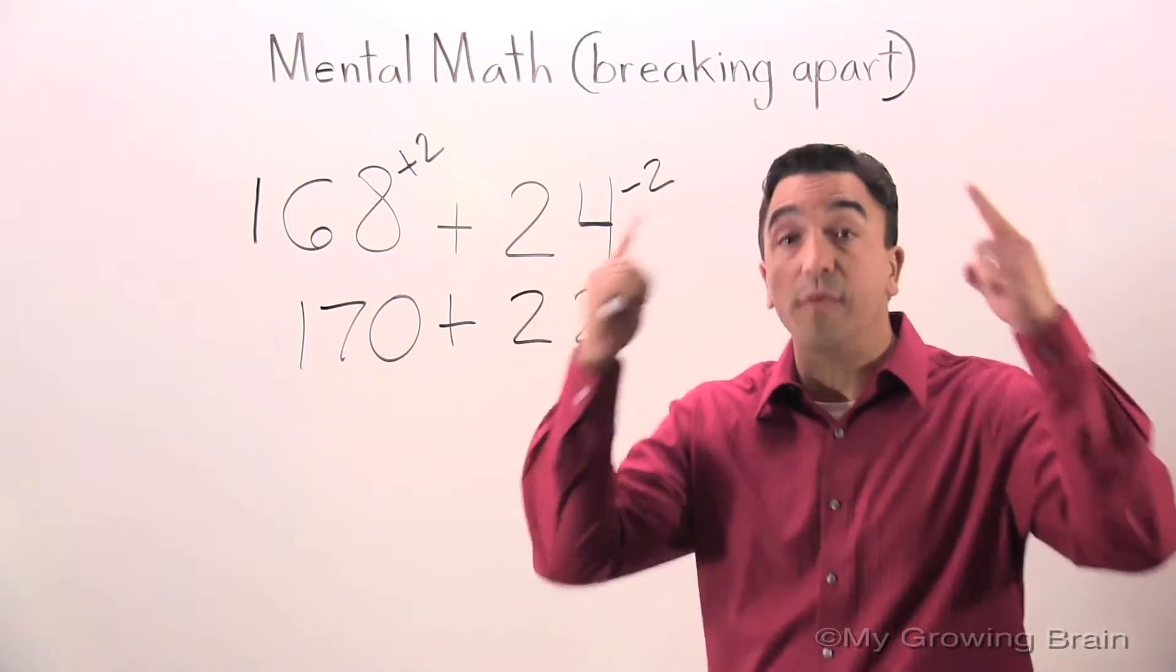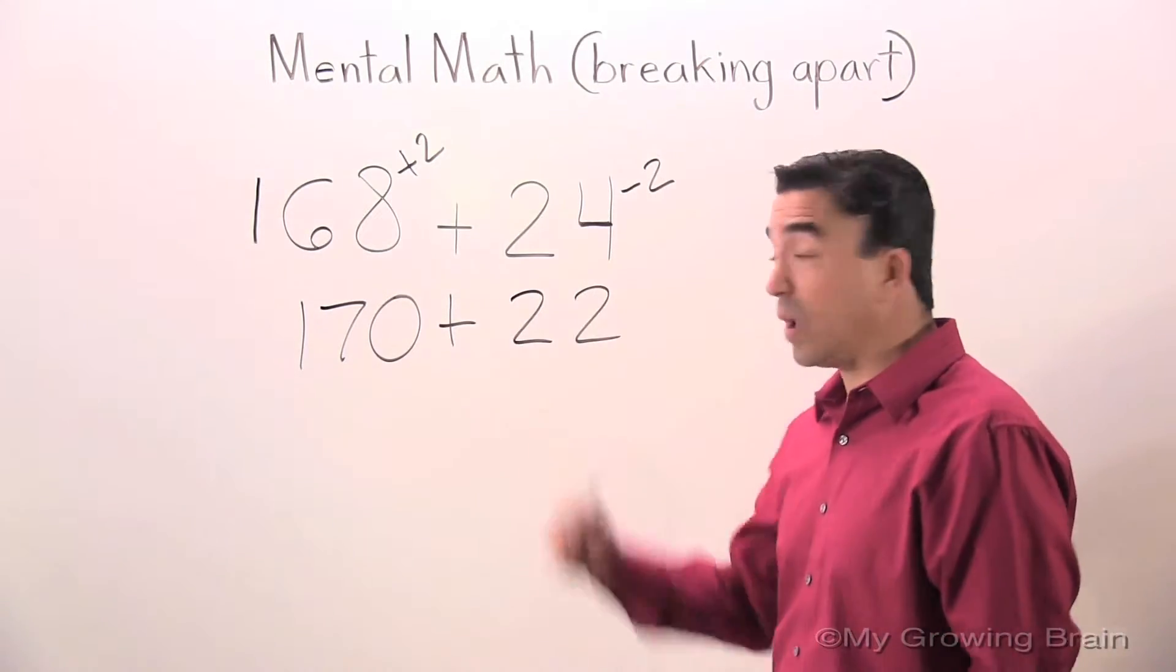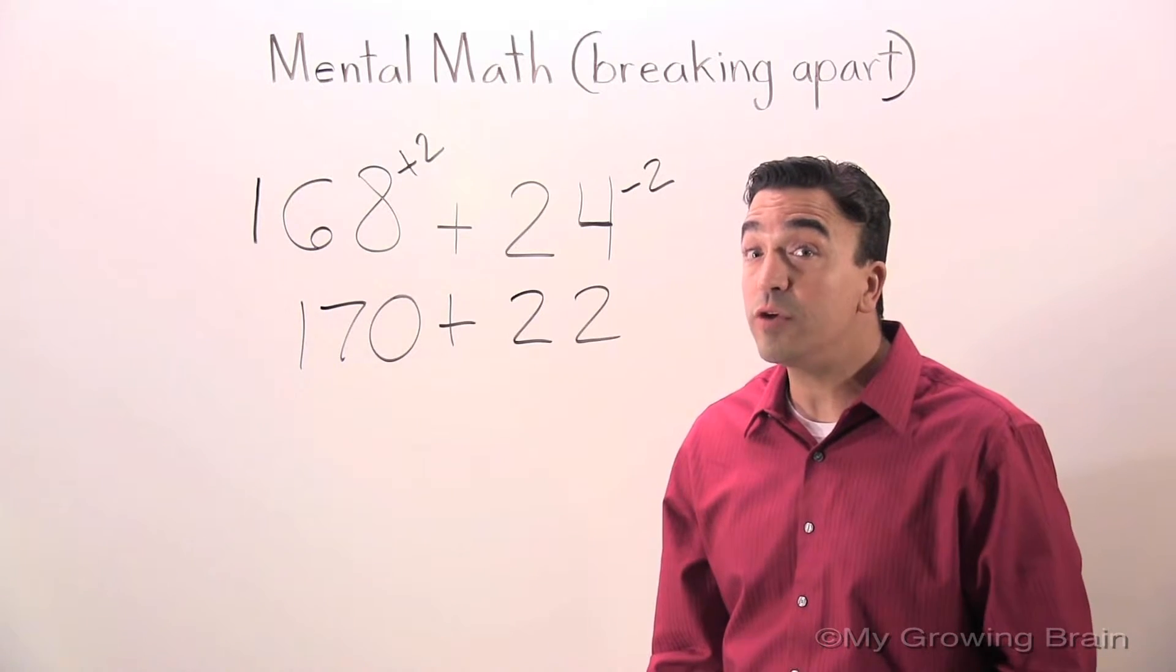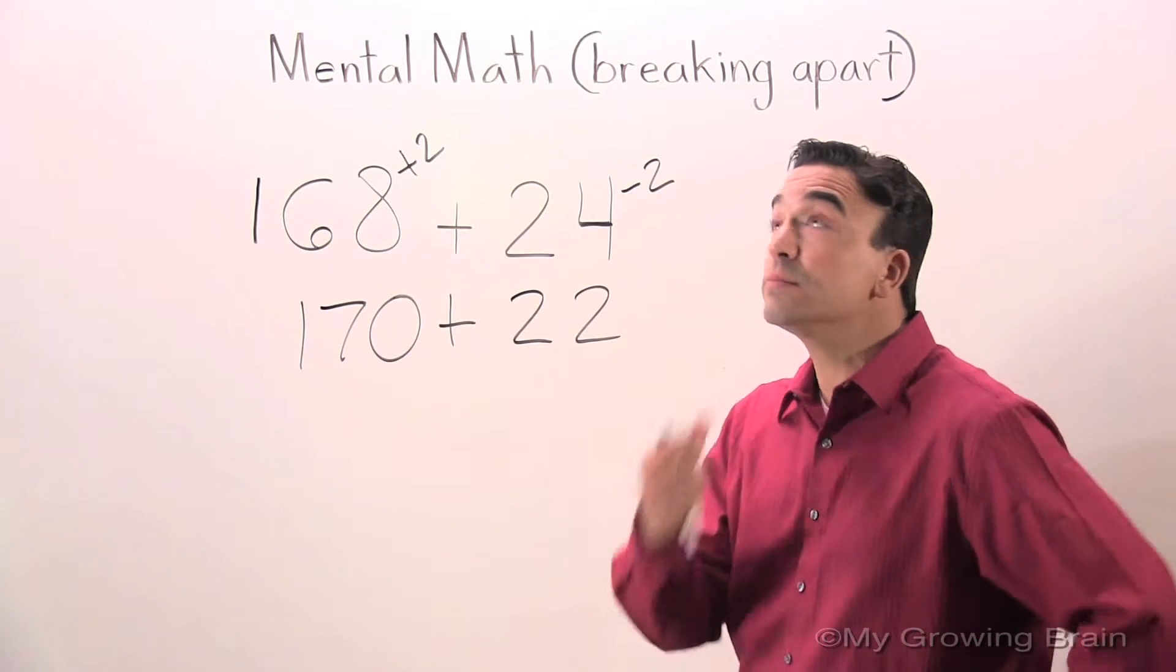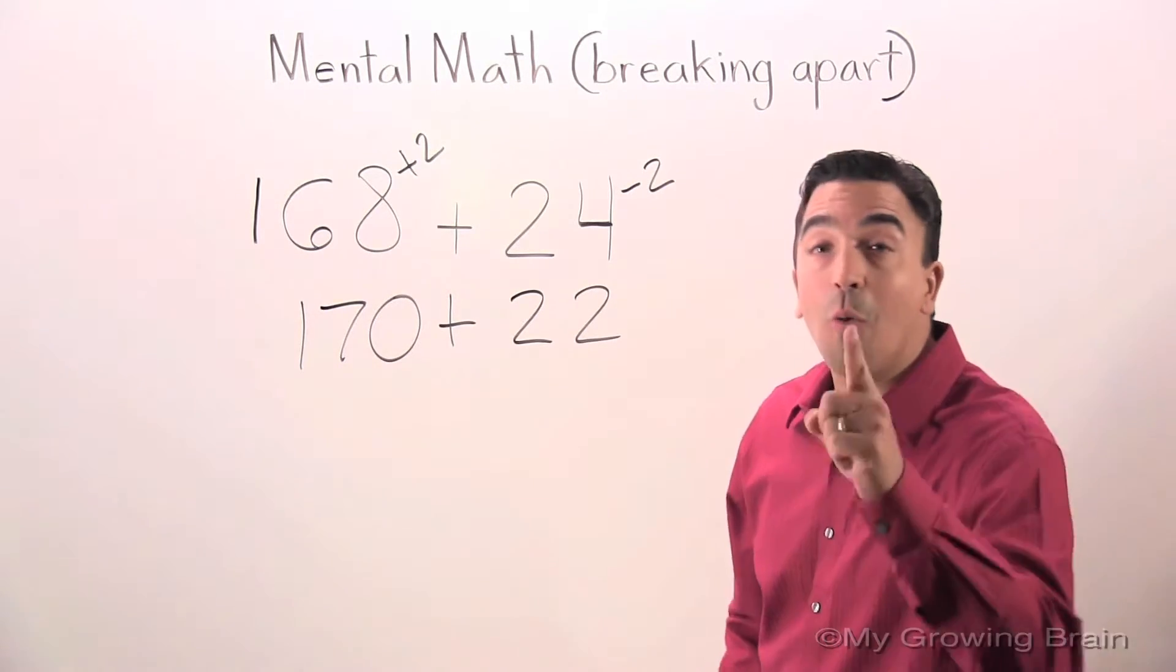Now we're going to use mental math. 170 plus 22 equals 192.